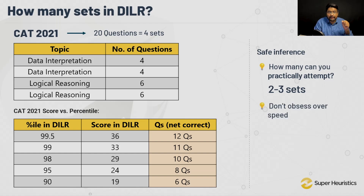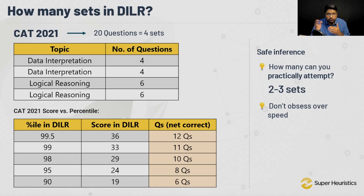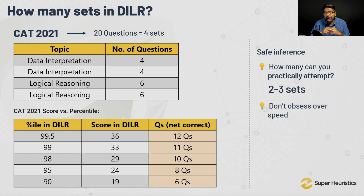The second inference you can easily make is: do not obsess over speed. If your objective is not to solve all questions, why obsess over speed? DILR is more about planning — which is the theme of DILR as per me — and then solving it properly and accurately.